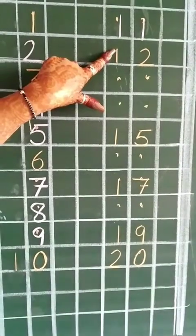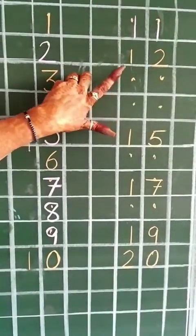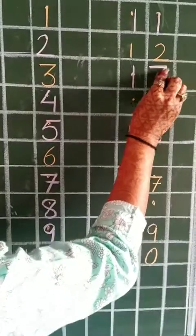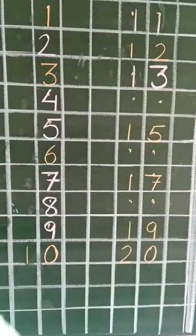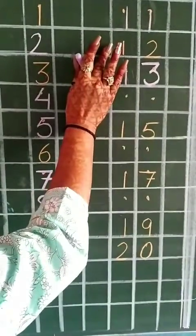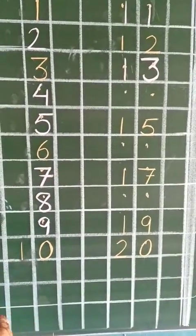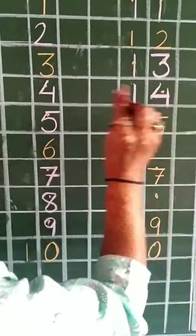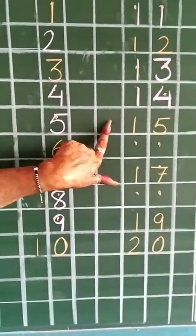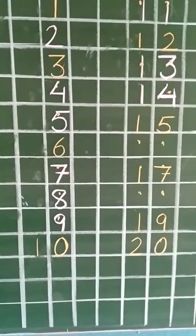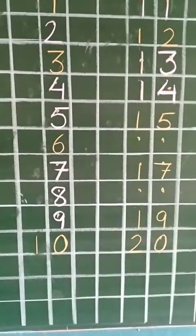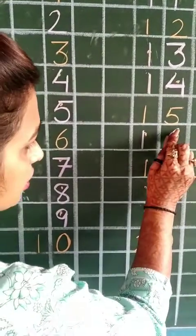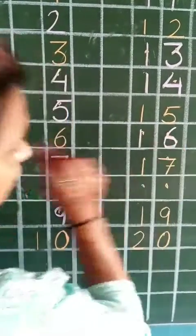In the next box, twelve is written, so we will not write twelve. Then we will write the next number. Twelve ke baad kya aata hai? Thirteen, one three, thirteen. Thirteen ke baad kya aega? Fourteen, one four, fourteen. In the next box fifteen is there, so we will not write fifteen.